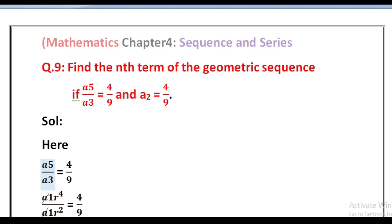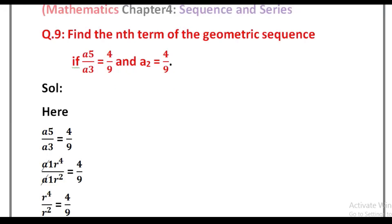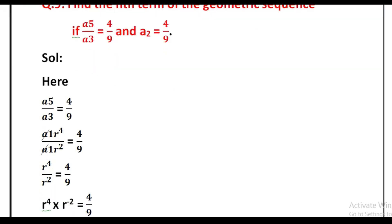The fifth term in a geometric progression can be written as a₁·r⁴, and a₃ can be written as a₁·r². So a₁·r⁴ divided by a₁·r² equals 4/9. The a₁ terms in the numerator and denominator cancel out.